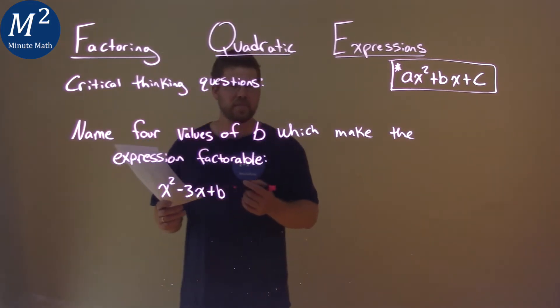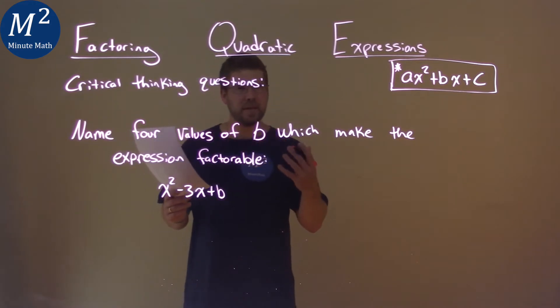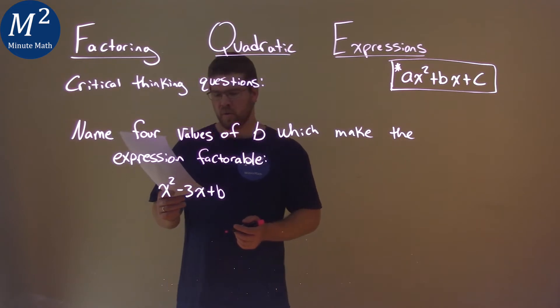Well, what do we know? We know we have to find a number that multiplies to b but adds to negative 3. Well, what about 0?